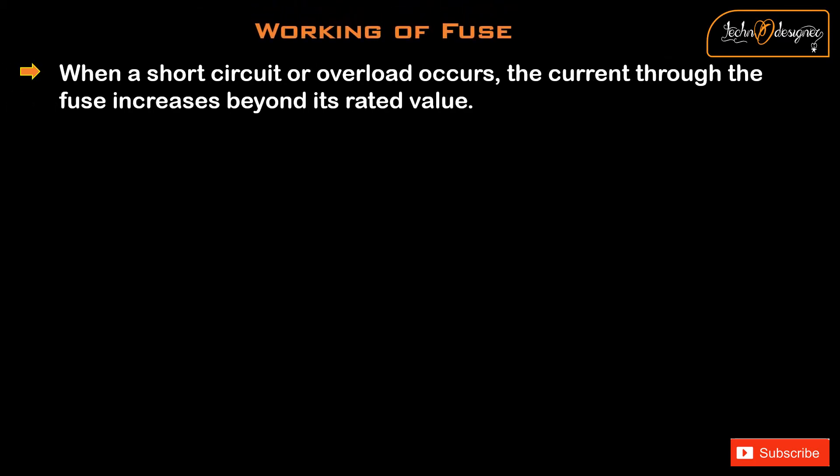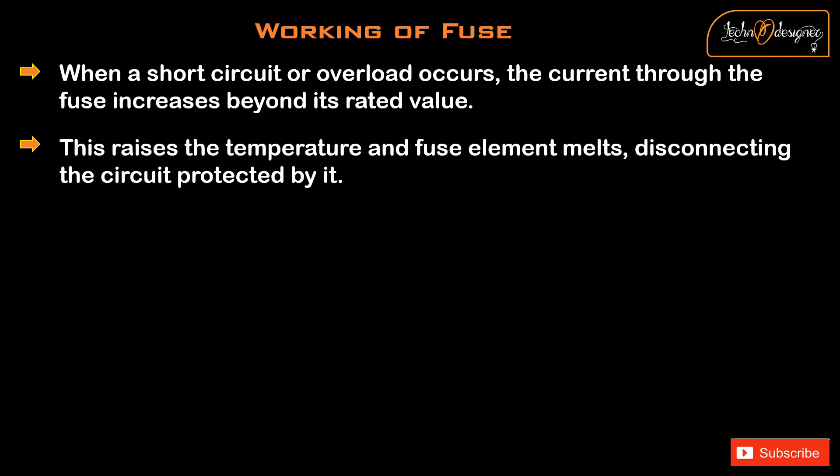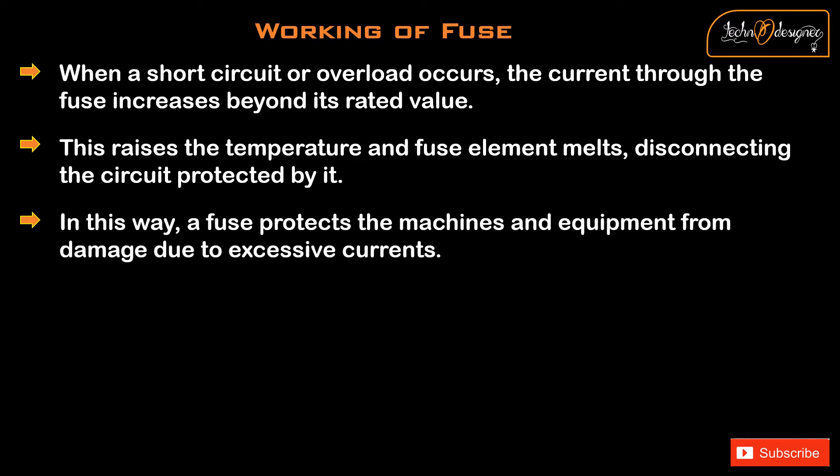Working of a fuse. When a short circuit or overload occurs, the current through the fuse increases beyond its rated value. This raises the temperature and the fuse element melts, disconnecting the circuit protected by it. In this way, a fuse protects the machines and equipment from damage due to excessive currents.